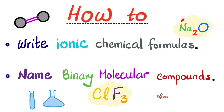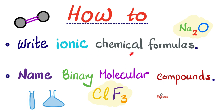When the difference in electronegativity is greater than 1.7, you have an ionic compound. But when the difference in electronegativity is less than 1.7, you have a covalent, molecular compound. So without further ado, let's get started.